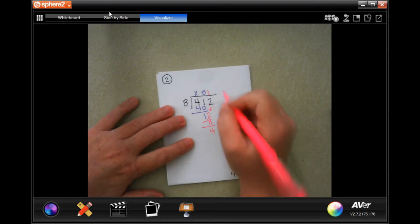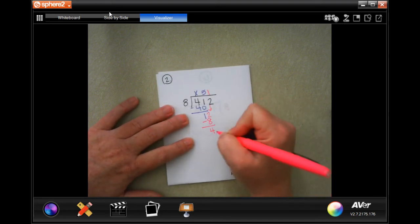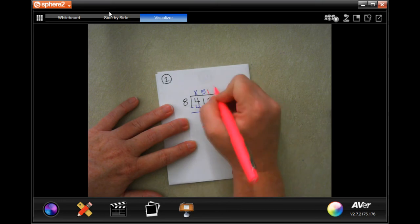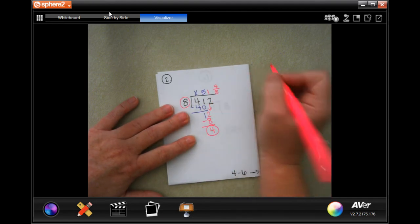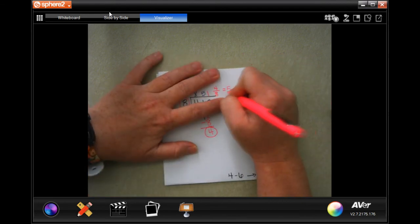Now, this one, it wants us to put the remainders into a fraction. So 4 is going to be my top number and 8 is going to be my bottom number. The only problem with that is that 4 over 8 is able to be reduced.